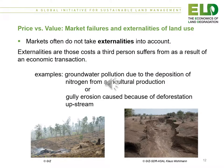Markets often do not take externalities into account. Externalities are those costs a third person suffers as a result of an economic transaction. Examples include groundwater pollution due to the deposition of nitrogen from agricultural production, or gully erosion caused by deforestation upstream.